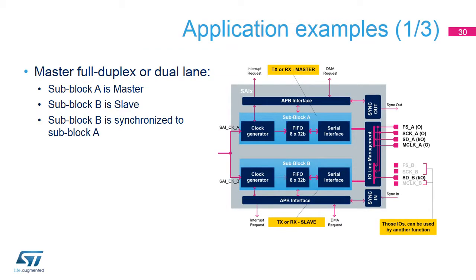For a full duplex master mode, two data lines are needed, so two sub-blocks need to be used. The master sub-block A provides the synchronization to the slave sub-block B using the internal synchronization feature or IO line management. Note that in this example, sub-block B only uses the SDB. The amount of IOs is reduced to its minimum thanks to the internal synchronization.